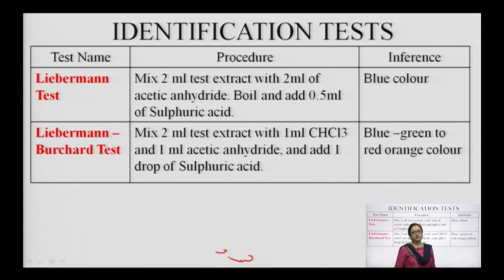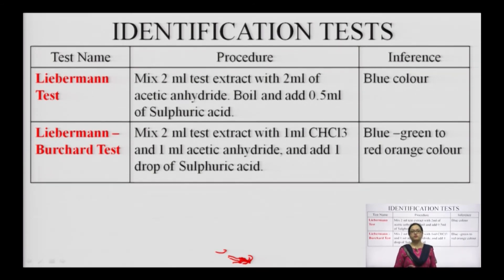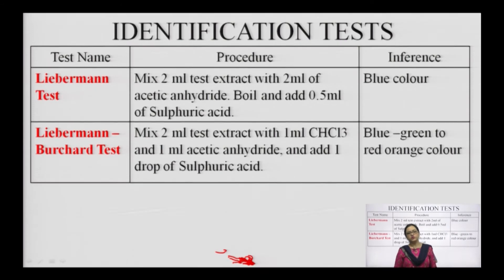The next identification tests are the Liebermann test and the Liebermann-Bouchard test. In the Liebermann test, we take 2 ml of the test extract, add acetic anhydride, boil it, and then treat with 0.5 ml of sulfuric acid — this gives a blue colouration indicating the presence of atropine. In the Liebermann-Bouchard test, we take 2 ml of the test extract, add chloroform, then 1 ml acetic anhydride, and add 1 drop of sulfuric acid — this gives a blue-green to red-orange colour, indicating the presence of atropine.